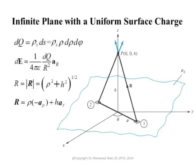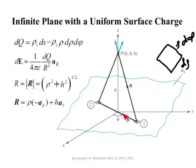We'll use the typical area element in cylindrical coordinates. The area element is dRu times Ru dPhi. We integrate Ru from 0 to infinity to sum the contributions from all components, and integrate phi from 0 to 2π to sum all contributions from all elements. This gives the charge of that infinitesimal surface element: the charge density in C/m² multiplied by the area.